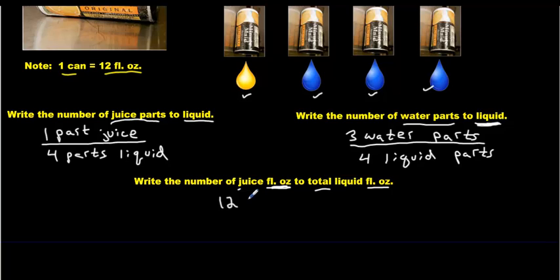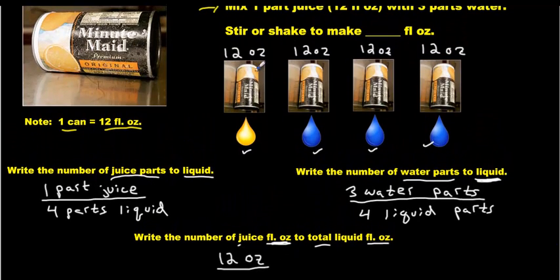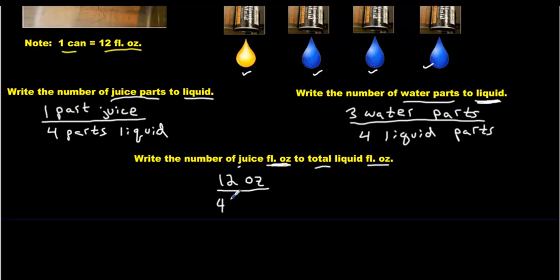But how much total liquid ounces do we have? 12 and 12 and 12 and 12. We have 48 fluid ounces. So we have 48...